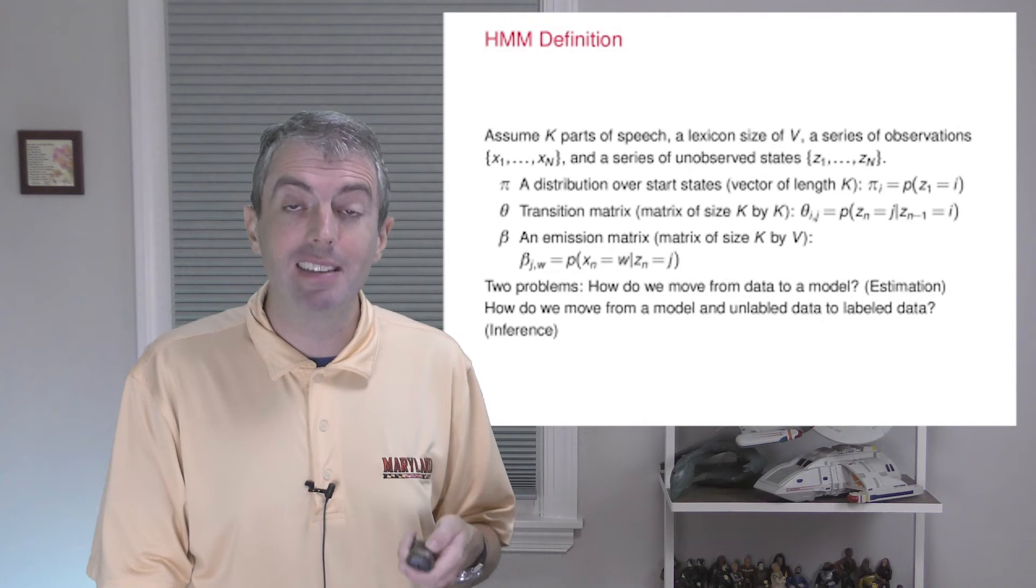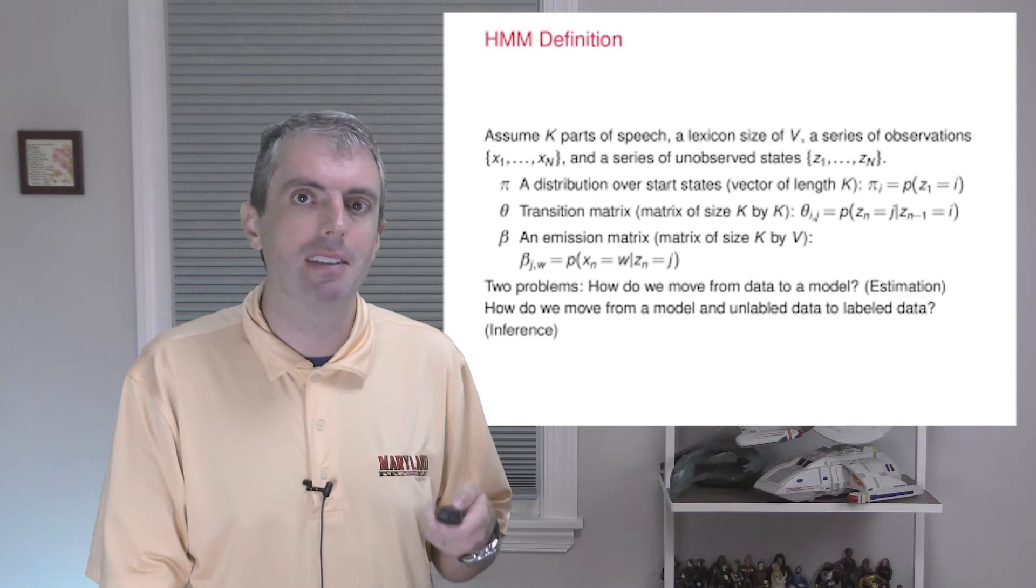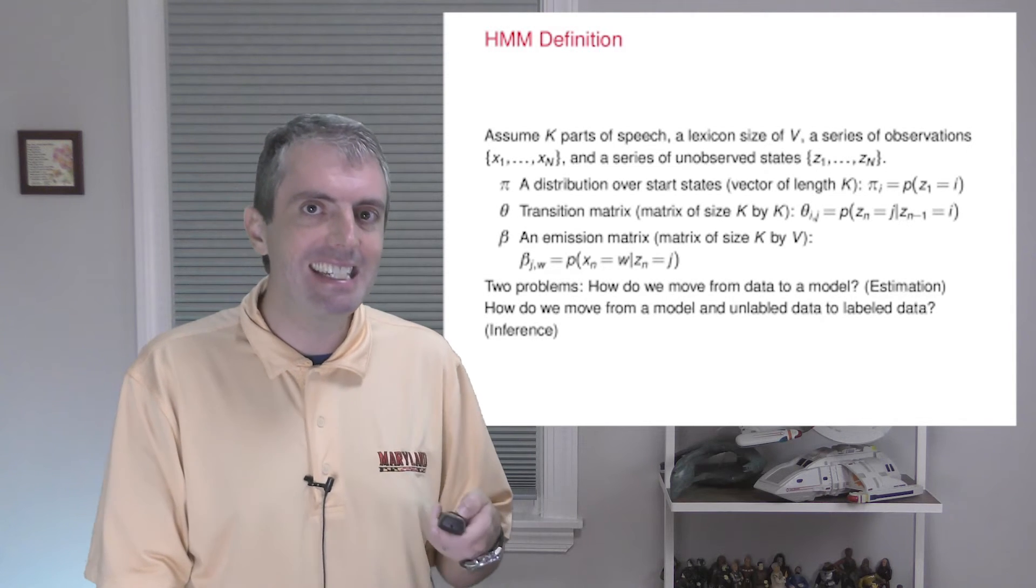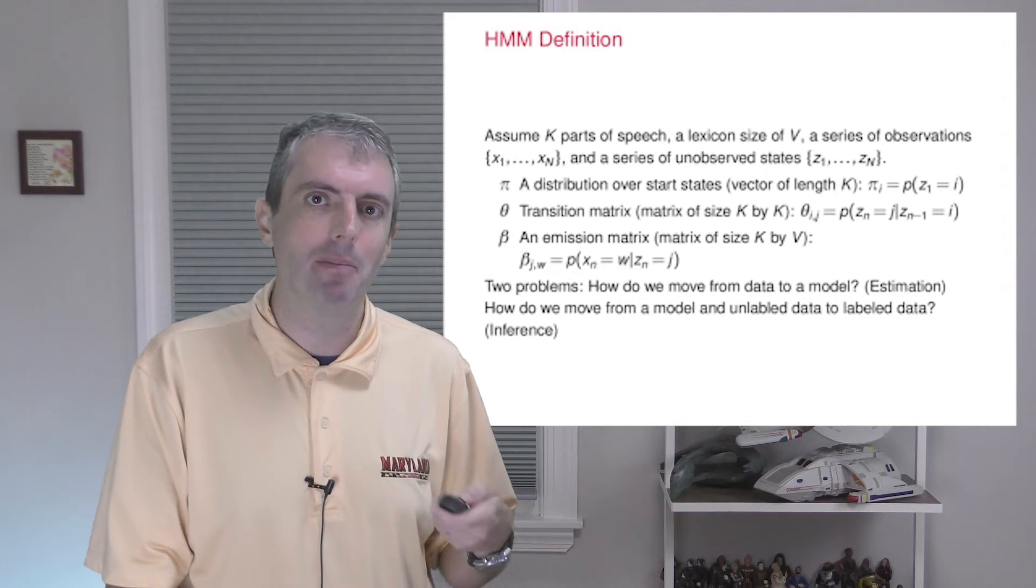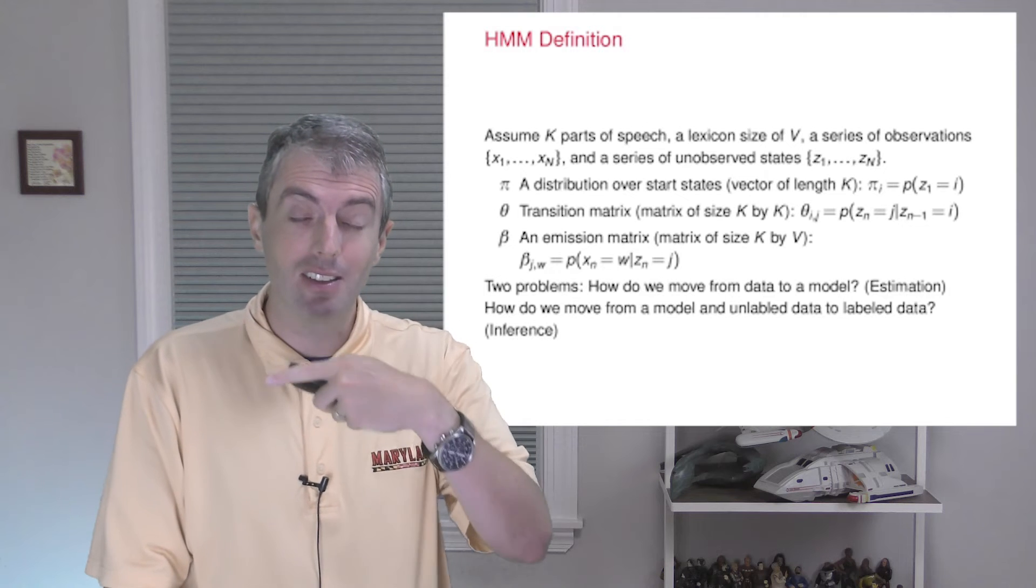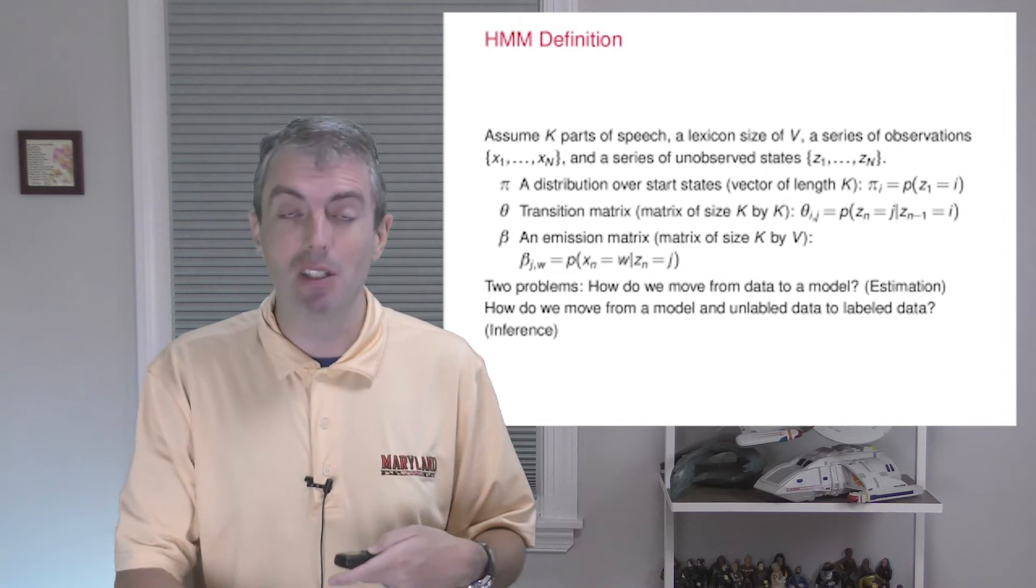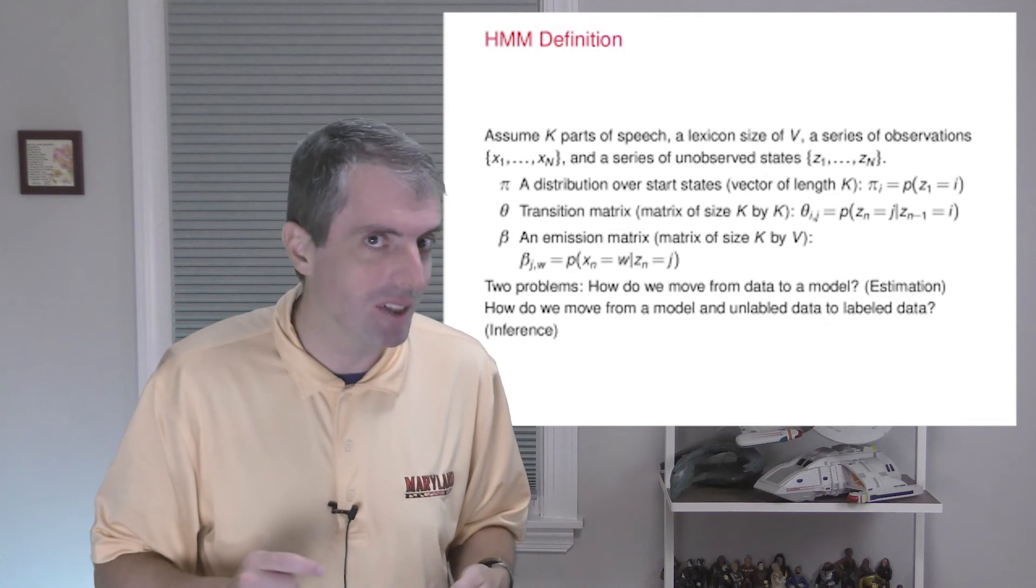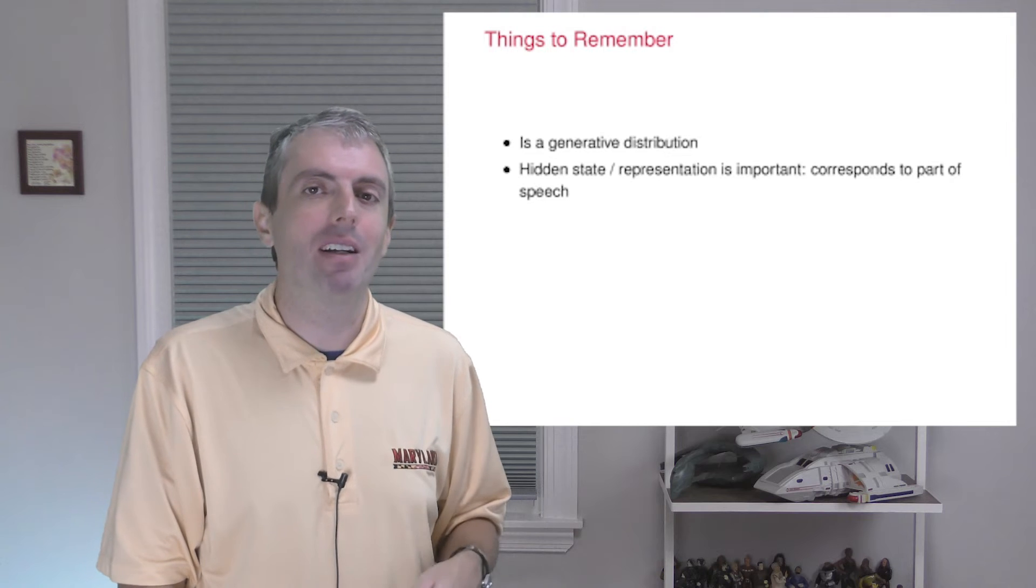So all of these things together define a joint probability distribution over a sequence of part of speech tags z and observations x. A good exercise would be to practice computing the probability of a sequence, like what I just sketched out before, without the emission probability. But you should do it again with the emission probability. And that's it! That's the definition of a hidden Markov model.